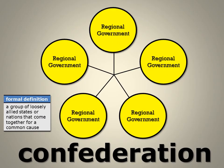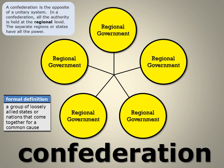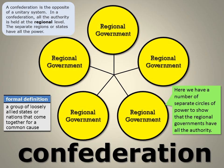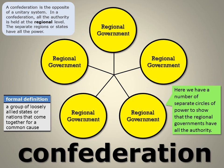Our next system is called confederation. A confederation is a group of loosely allied states or nations that come together for a common cause. A confederation is the exact opposite of a unitary system. In a confederation, all the authority is held at the regional level — the separate regions or states have all of the power. Here we see a number of separate circles of power to show that the regional governments hold all the authority in a confederation.